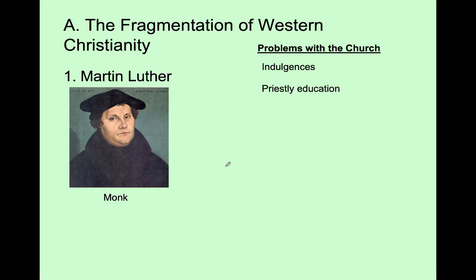Luther also challenged the Church on priest education — many priests could not read the Bible they were supposed to teach. He argued the Bible should be the center of life, not what the Church says. Martin Luther said every Christian, whether priest or layperson, should read the Bible for themselves and determine God's will, not have it interpreted by the Pope. This directly threatened the Catholic Church's power structure, which claimed that God talks to the Pope and through the Pope you understand God. If anybody can interpret the Bible themselves, that really threatens the Church's authority.